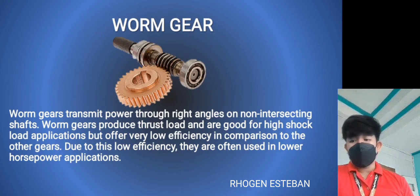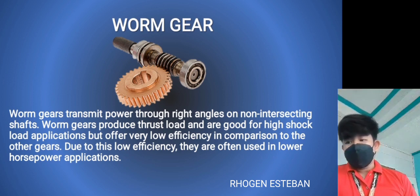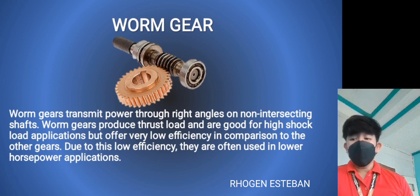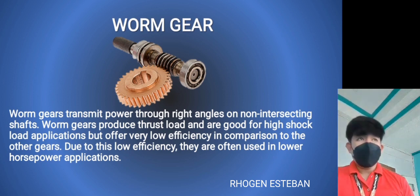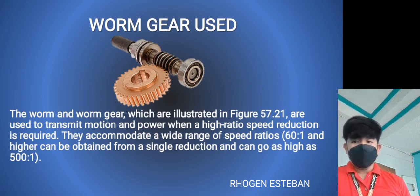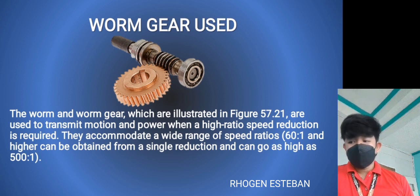Worm gears transmit power through right angles on non-intersecting shafts. Worm gears produce thrust loads and are subject to high shock due to low efficiency, so they are often used in lower horsepower applications where high ratio speed reduction is required. They accommodate a wide range of speeds.